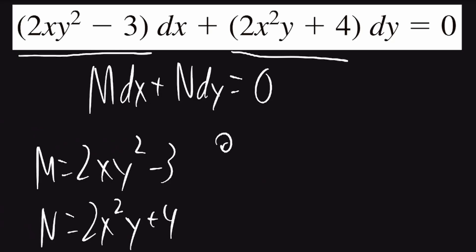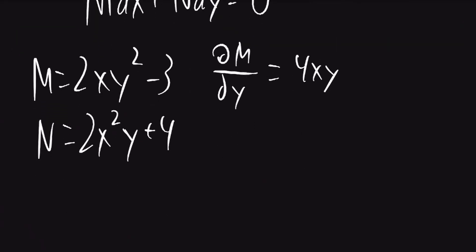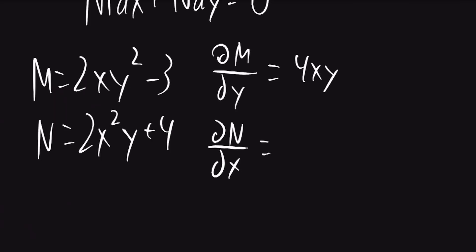We can now take the partial derivative of m with respect to y. That's going to be 4xy. We can take the partial derivative of n with respect to x, which is also going to be 4xy. Because these terms are the same, we know that this differential equation is exact.